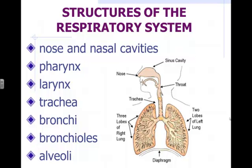You need to be able to list in order the path that air takes through the human body. Ideally it enters through your nose and nasal cavity — we'll talk about some advantages to that rather than breathing through your mouth. Then it goes through the pharynx, the larynx, the trachea, the bronchi — which is plural for bronchus, there are two — then the bronchioles, and finally the alveoli.